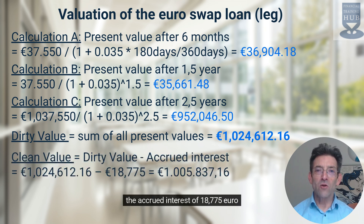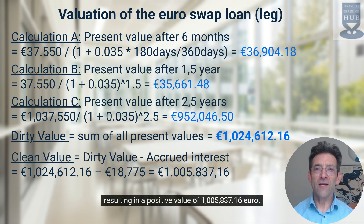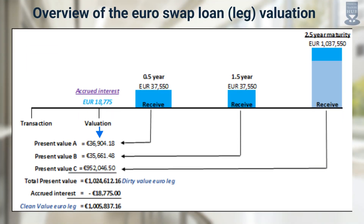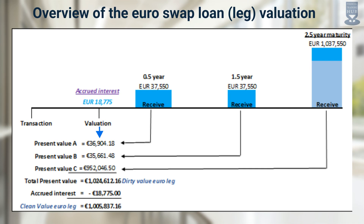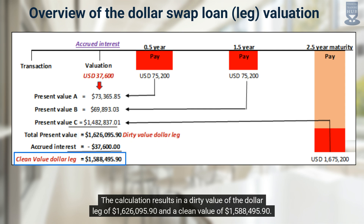To calculate the clean value, the accrued interest of €18,775 is deducted from the dirty value of €1,024,612.16, resulting in a positive value of €1,005,837.16. The valuation of the euro loan of the swap is summarized in the next overview. The same valuation calculations can be made for the dollar loan, resulting in a dirty value of the dollar leg of $1,626,095.90 and a clean value of $1,588,495.90.